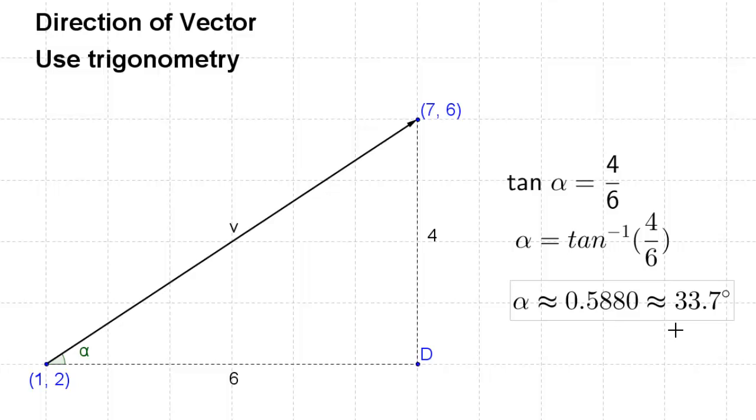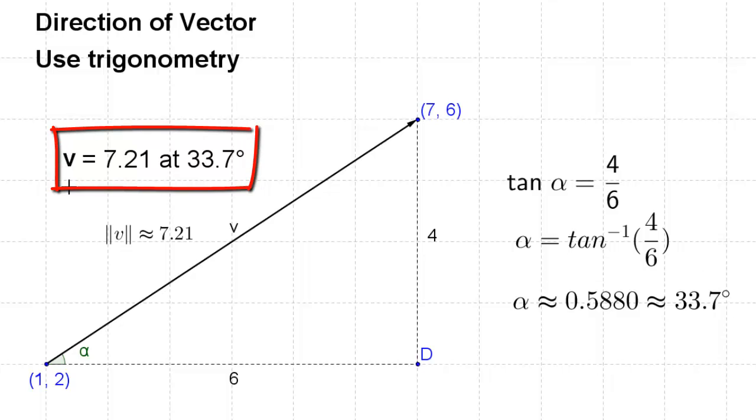Typically in vectors, degrees are used. So now we actually know everything we need to know about this vector because we know its magnitude and direction. Vector v has a magnitude of 7.21 traveling at a direction of 33.7 degrees.